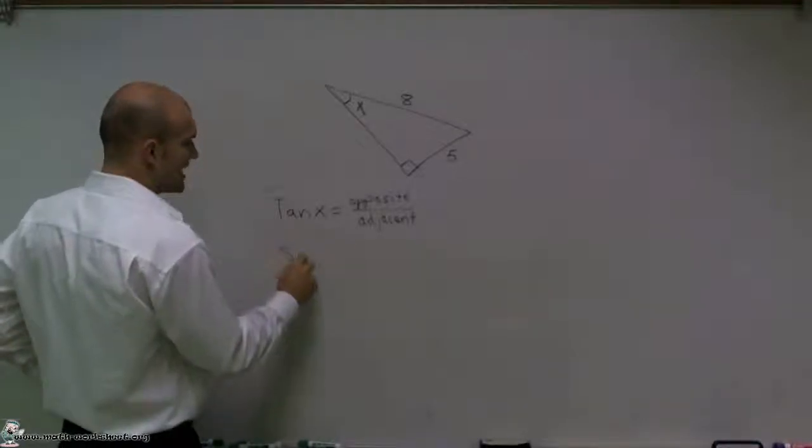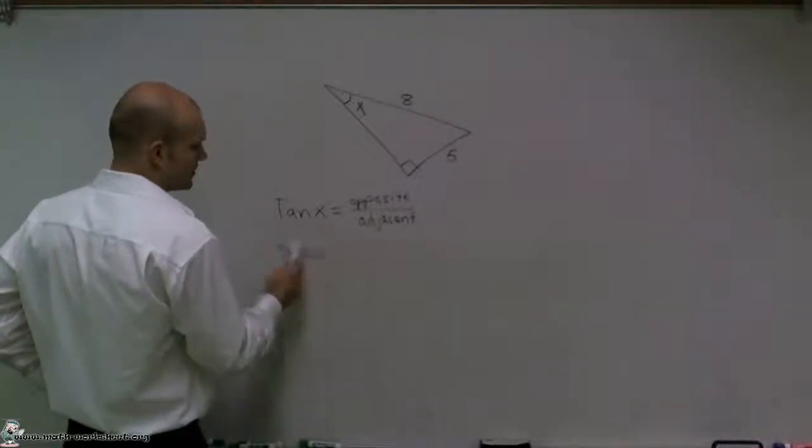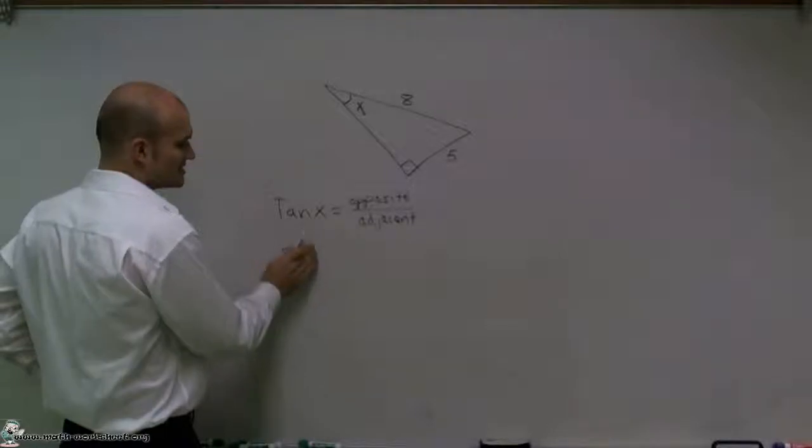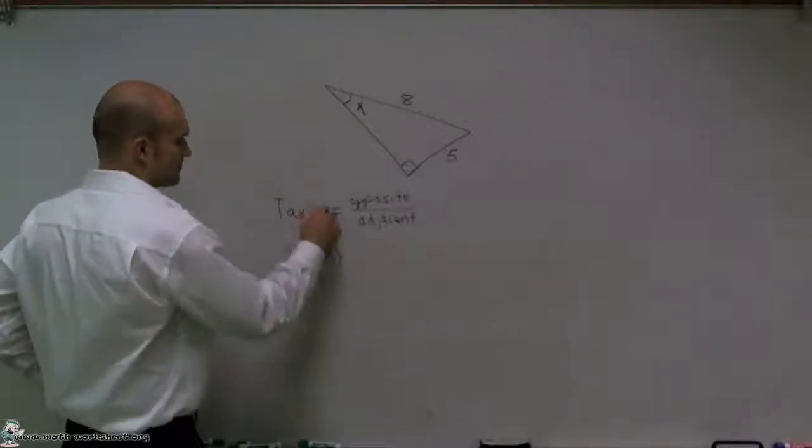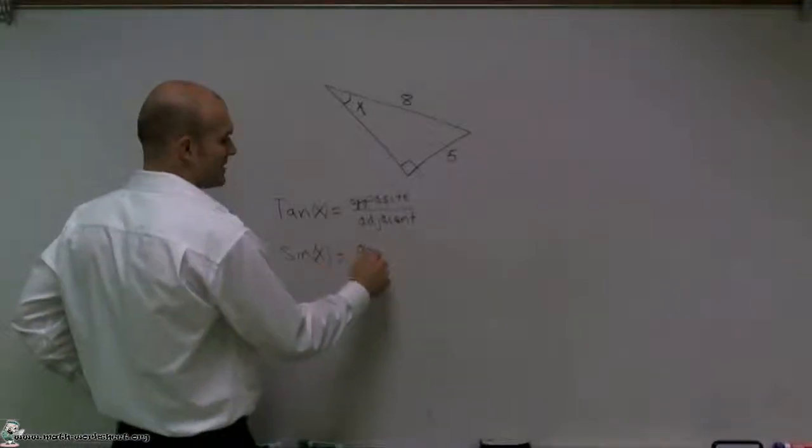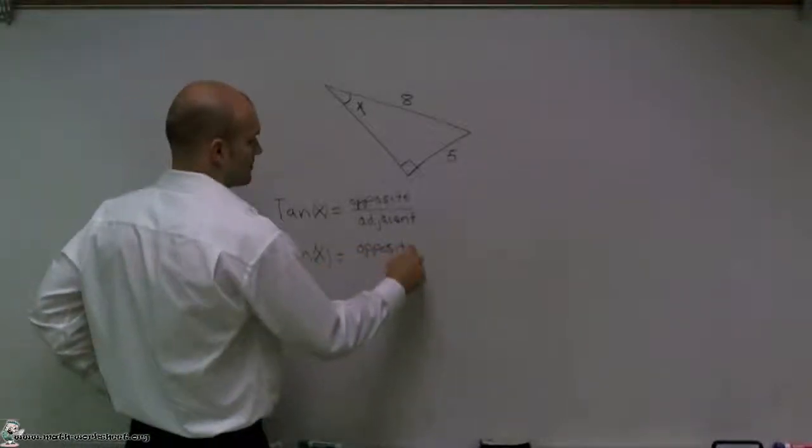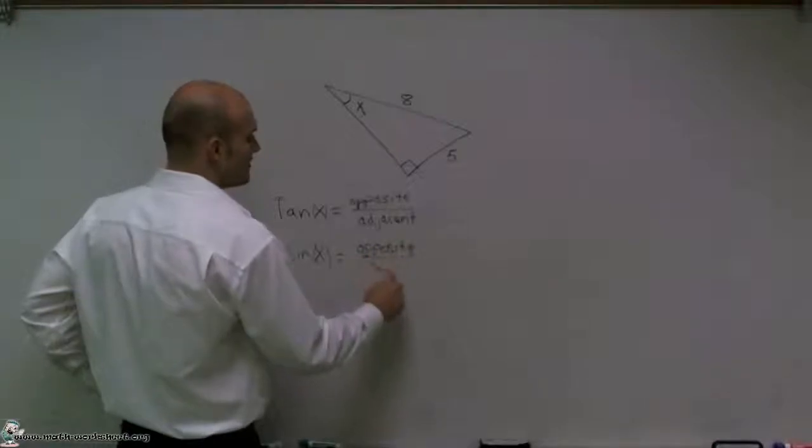The next one is your sine function. Usually we just abbreviate sine as sin. So sine of x is equal to the ratio of the opposite side length over your hypotenuse.